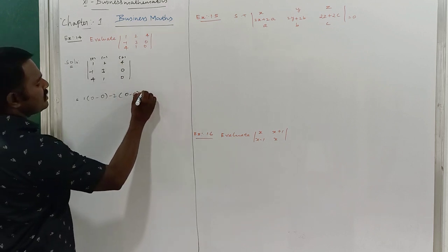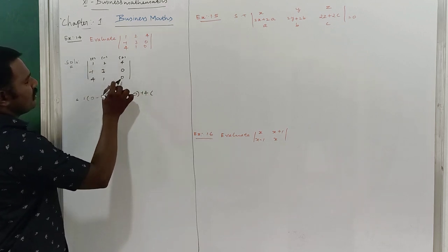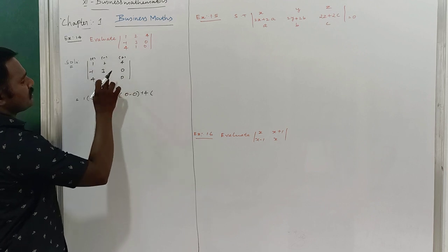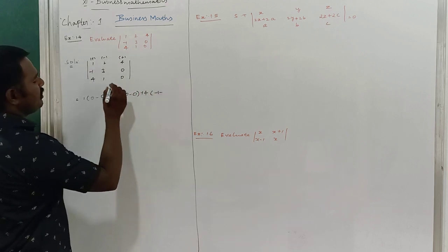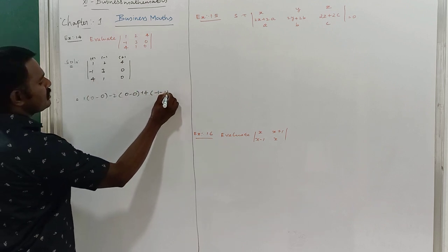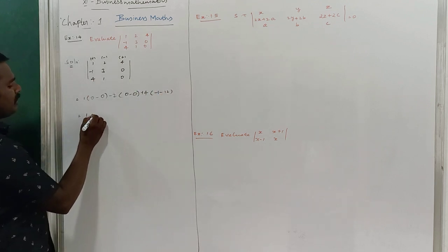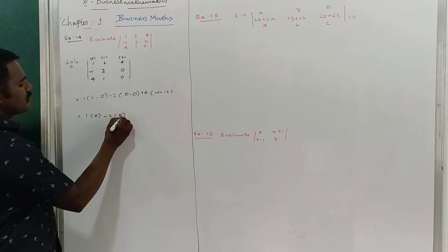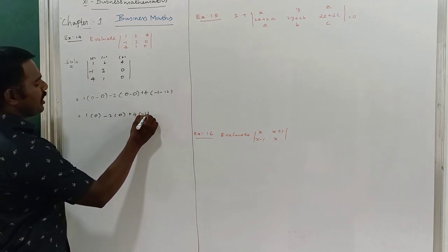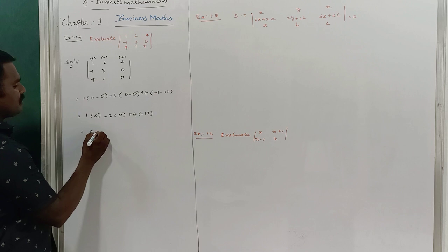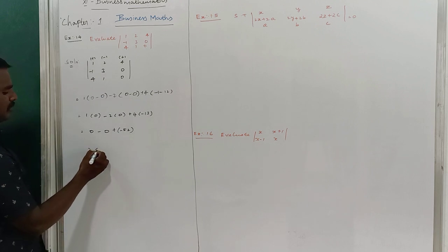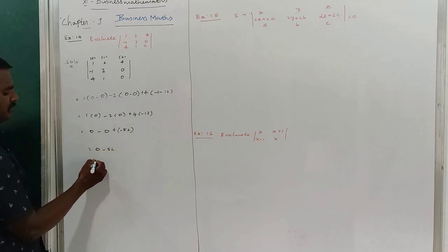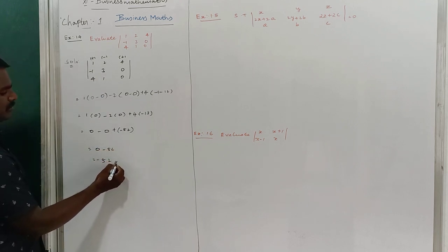The last one is plus 4. Plus 4 means I can remove this row and this column. So what is the product? 1 into minus 1 is minus 1. Minus of 4, 3 is 12. So therefore, 1 into 0, minus 2 into 0, plus 4 into minus 13. So therefore, 0 minus 0, 12, balance 1, 52, minus.